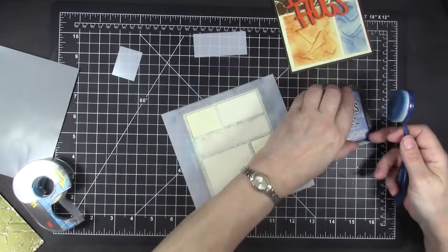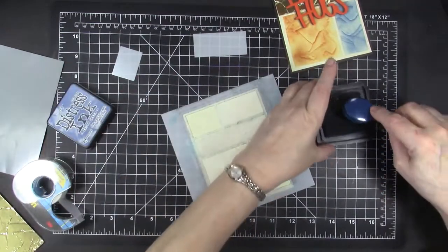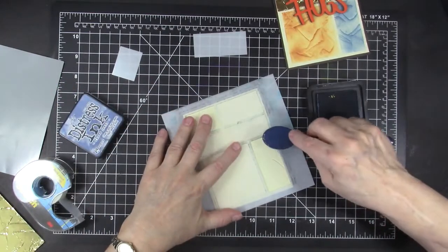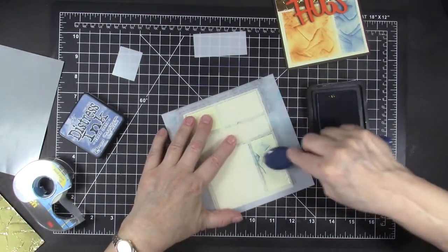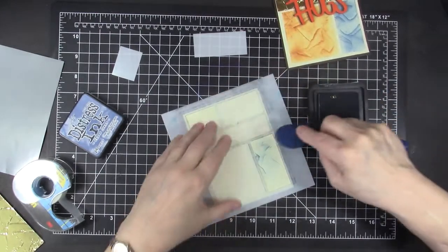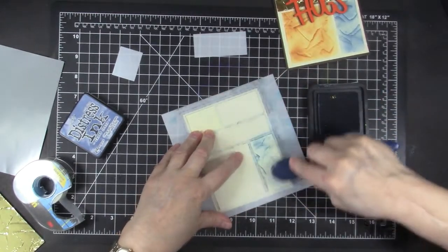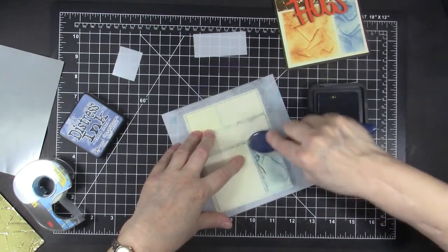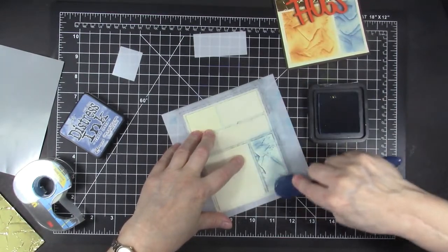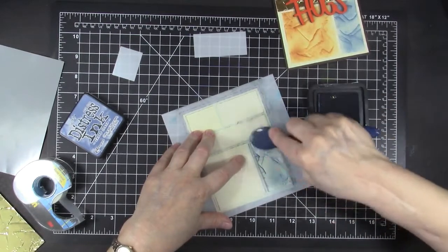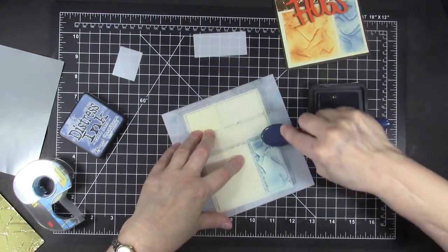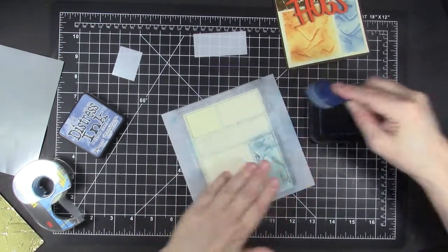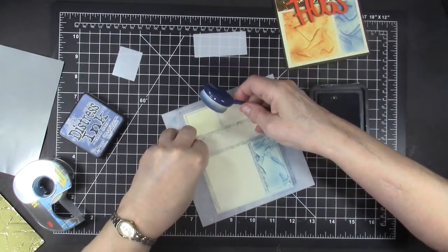I'm going to brush on some colors. In this case it's the Distress Ink Faded Jeans. And what's cool about this is because it's embossed, the areas that have the wrinkles of the embossing folder are going to catch more ink. And I just think that's a really cool look.